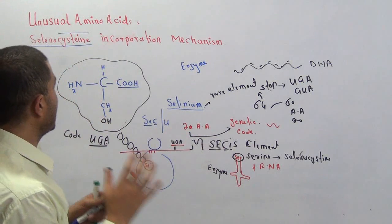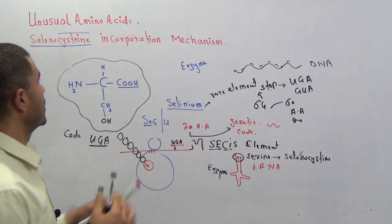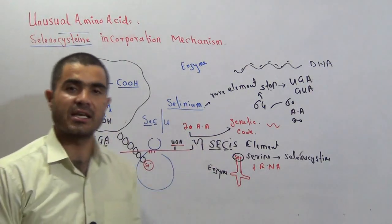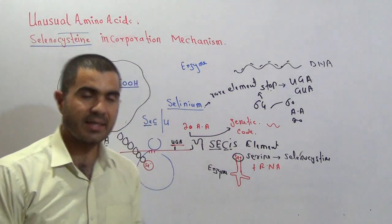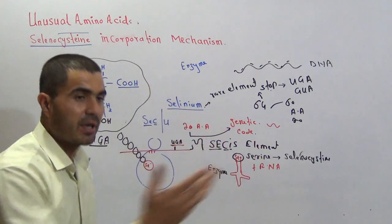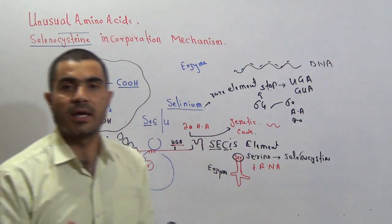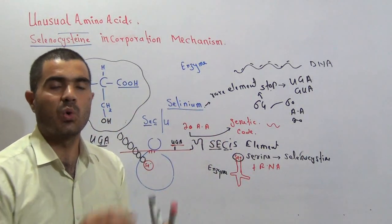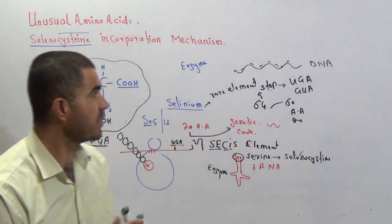So UGA will not serve as a stop codon but will serve as a code for selenocysteine. In this way the mechanism of selenocysteine incorporation into protein has been completed. Now if we come to the next amino acid — we will not discuss its mechanism, only the structure. The next amino acid is pyrrolysine.